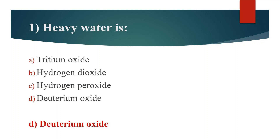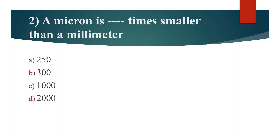Second question. A micron is how many times smaller than a millimeter? Option A: 250. Option B: 300. Option C: 1000. Option D: 2000. Answer is Option C: 1000.